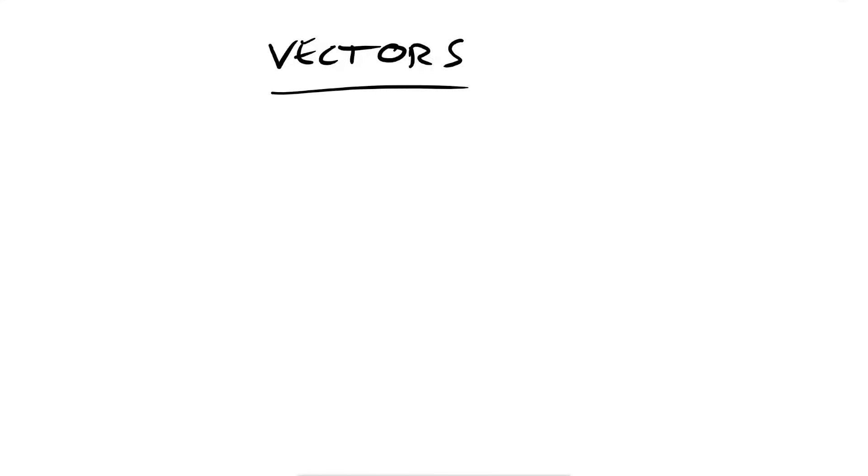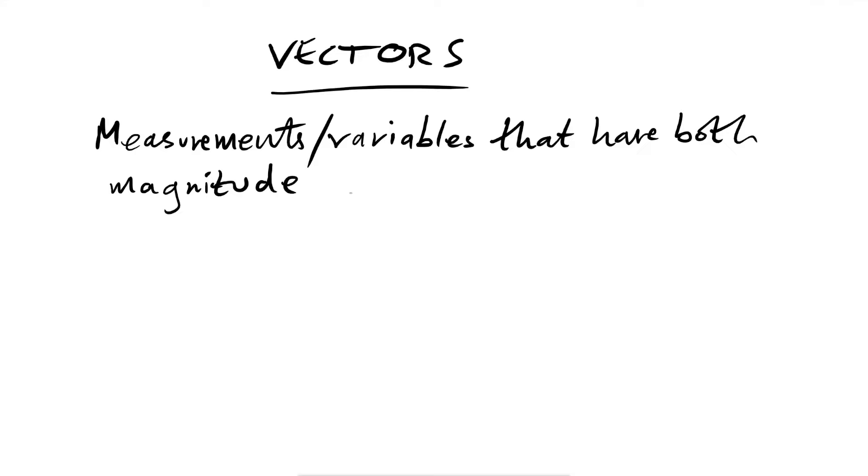Let's talk about vectors. Vectors are one of the most important ideas in physics. They are measurements or variables that have both magnitude—basically how big the number is, how big the measurement is—and direction, whereas scalars only have magnitude.